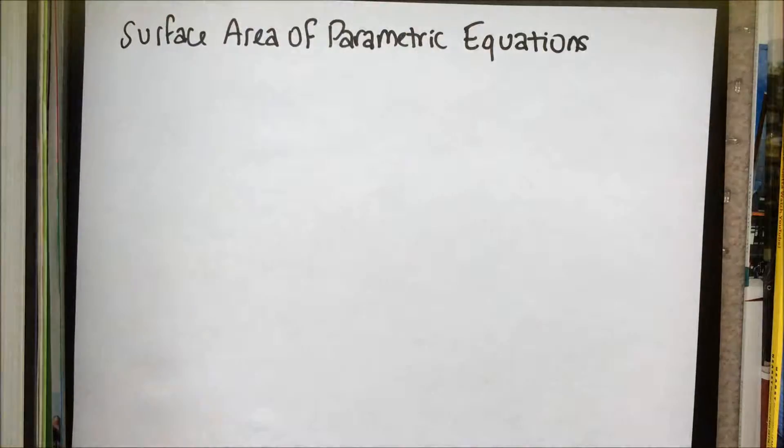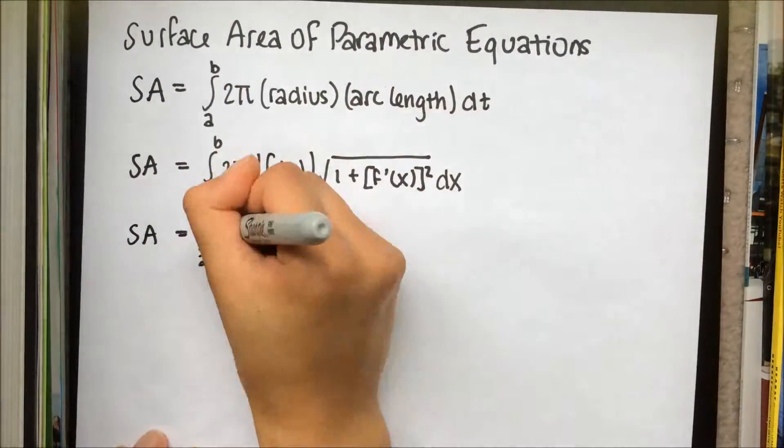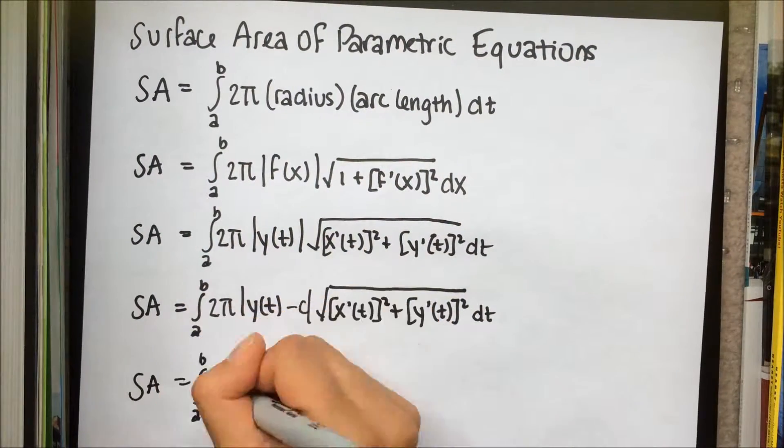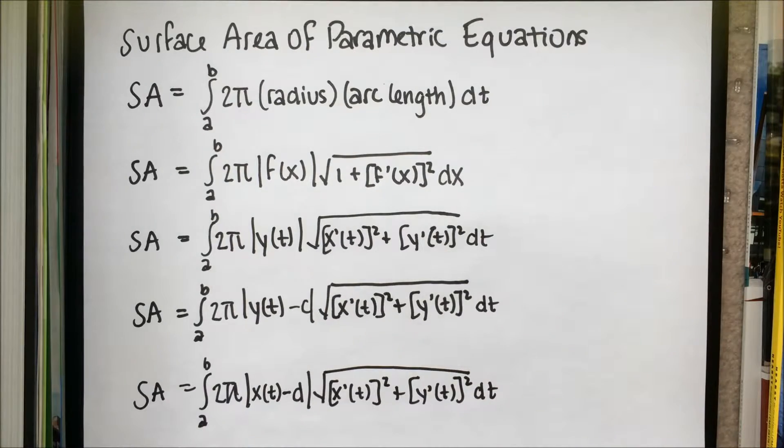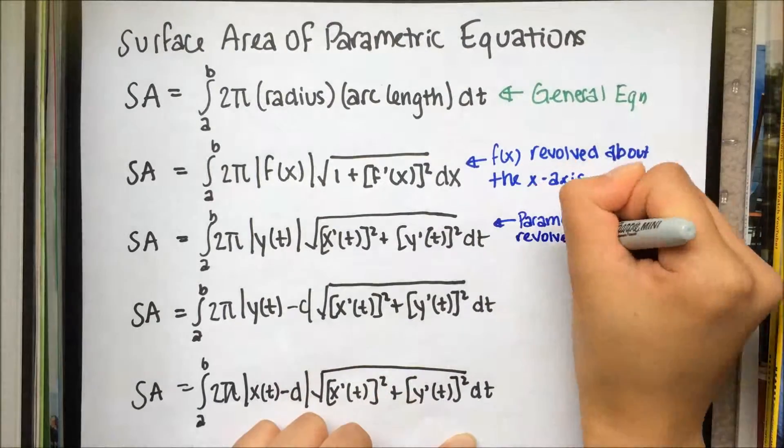The surface area of a parametric equation is as follows. The first equation is the general equation. As we can see, the surface area is composed of taking the integral from a to b of 2 pi times the radius times the arc length dt. The other equations are more specific to how the equation is revolved around a line.